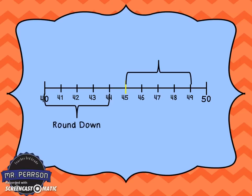Just like this — if it's a 0, 1, 2, 3, or 4, we're going to round down. If it's a 5, 6, 7, 8, or 9, then we're going to round that number up.